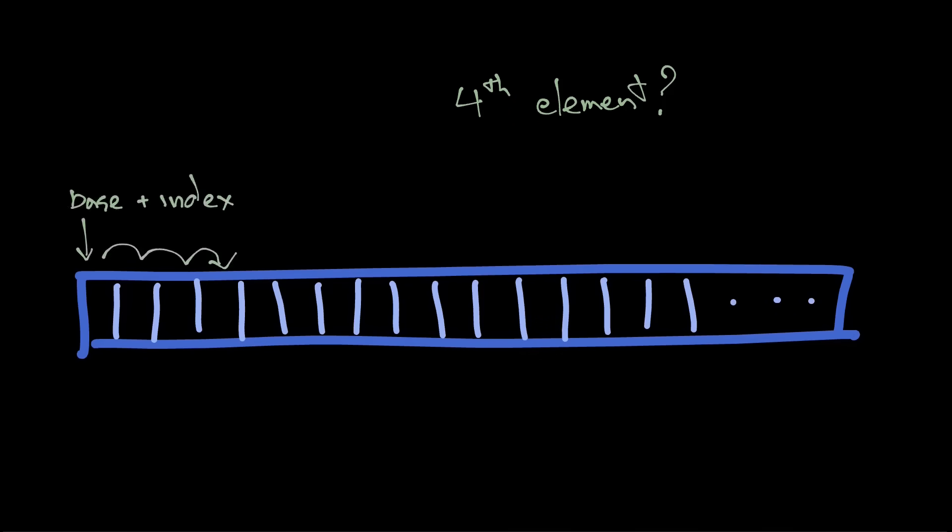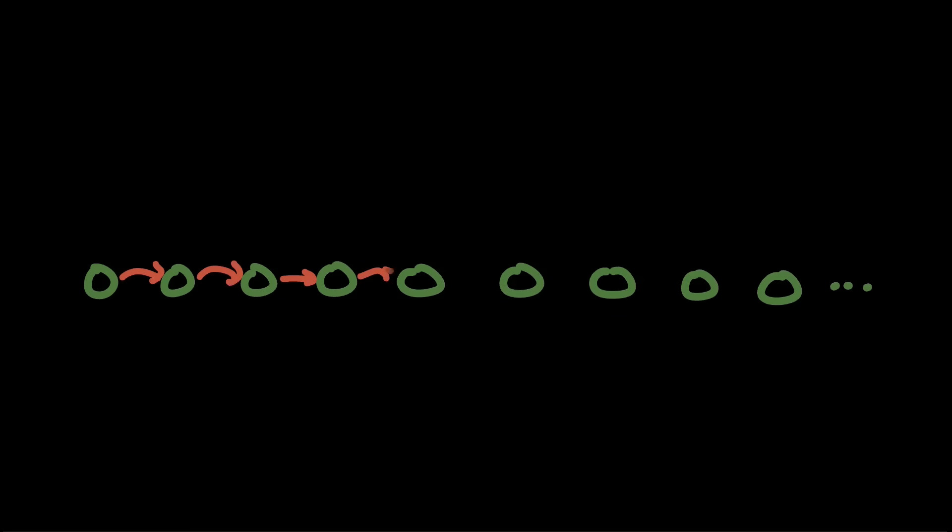Random access. This is like, give me the fourth element of the array. Super easy with arrays, because you just calculate the address as the base plus the index, and you get that memory. But with linked lists, this isn't easy at all. You have to traverse the list starting at the first node. So this really sucks.